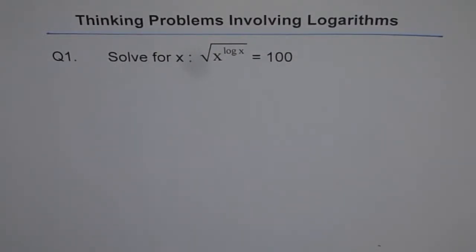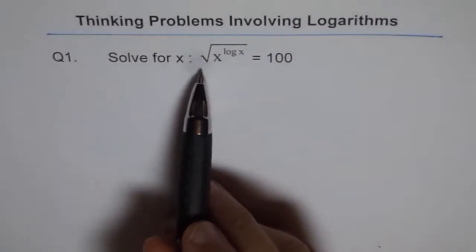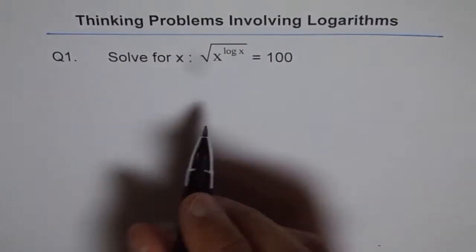Thinking problems involving logarithms. Question 1: Solve for x. Here is the equation: square root of x to the power of log x equals 100. Let's try to solve this.